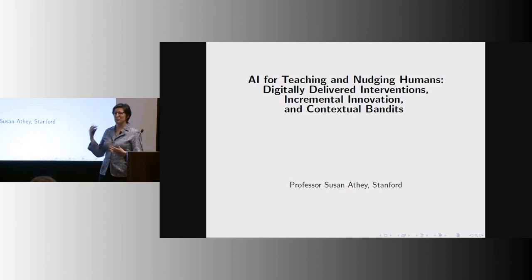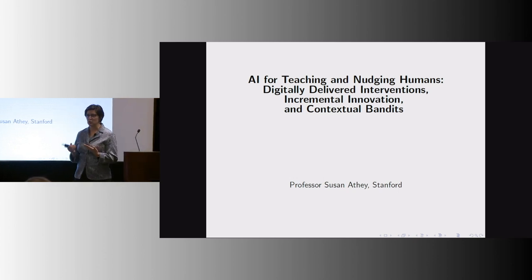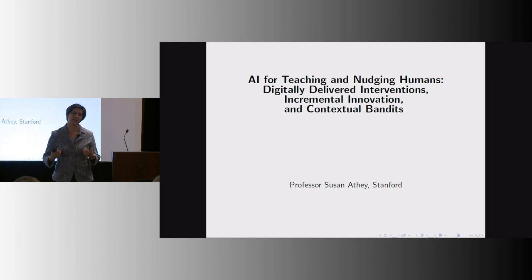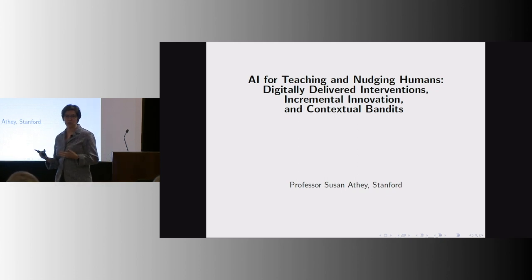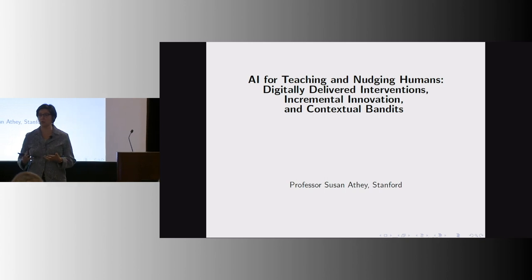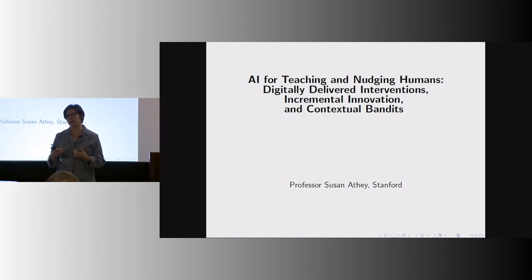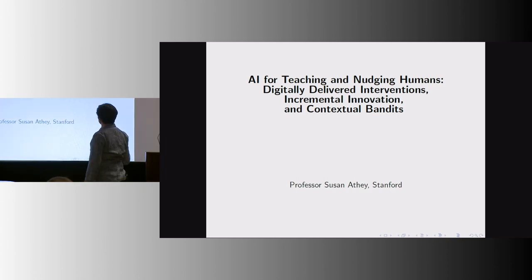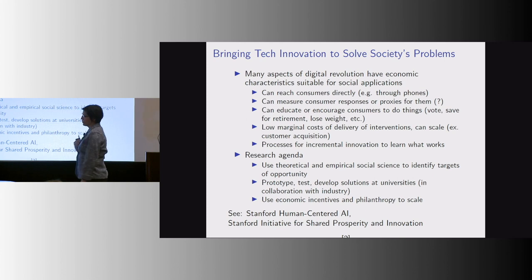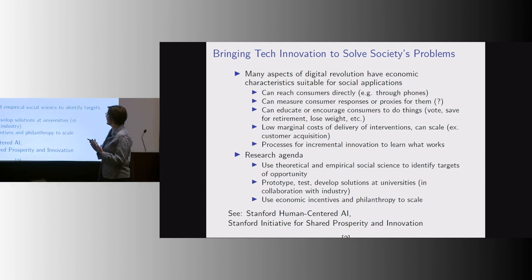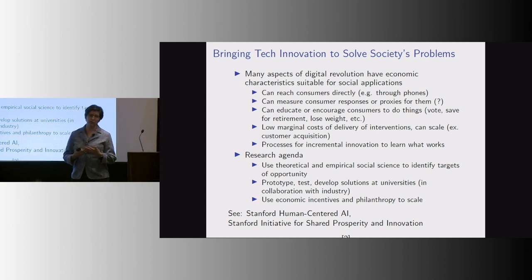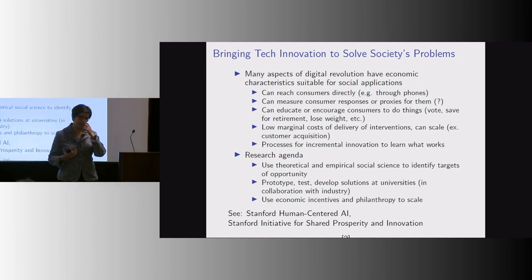The bigger goal is to use AI and ML to actually help people. I'm going to talk about the work I'm doing with collaborators at Stanford to create a platform for social scientists to be able to create innovations that are helpful for humans. Many aspects of the digital revolution have economic characteristics that are amenable to social applications.